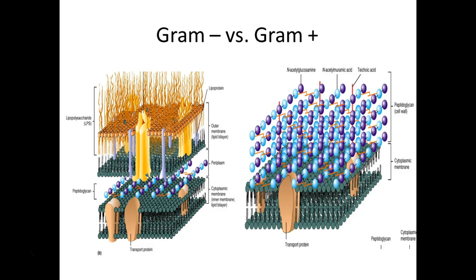The difference in staining results is due to the difference in cell structure. A typical gram negative — and not all gram negatives look exactly like this — has an outer membrane. This outer membrane differs from the cellular membrane: its outer portion is not phospholipids but lipopolysaccharide. This is what makes gram negative infections dangerous, because lipopolysaccharide is toxic to us.